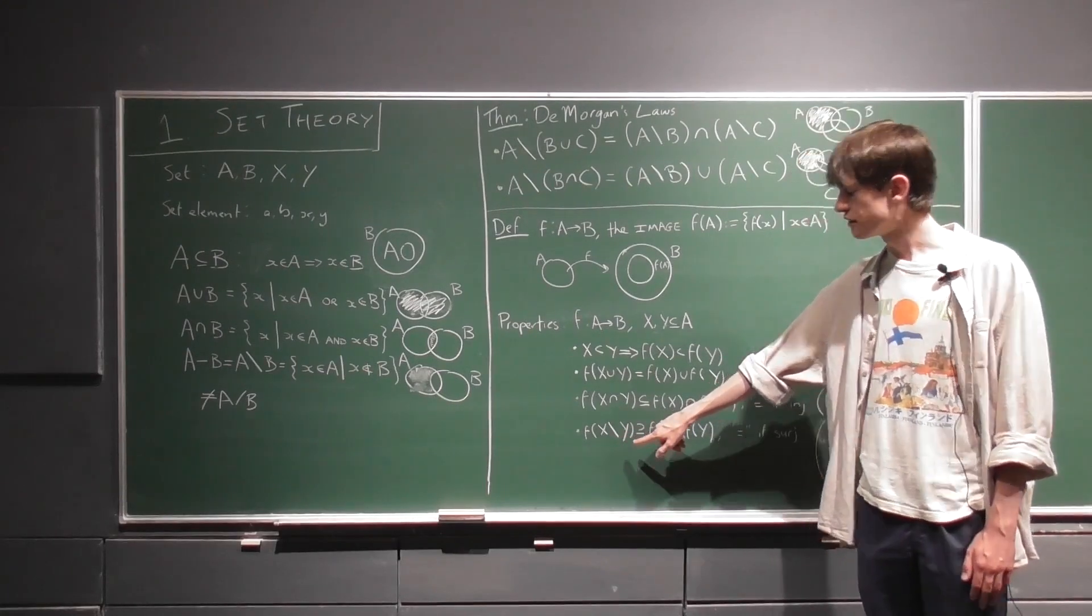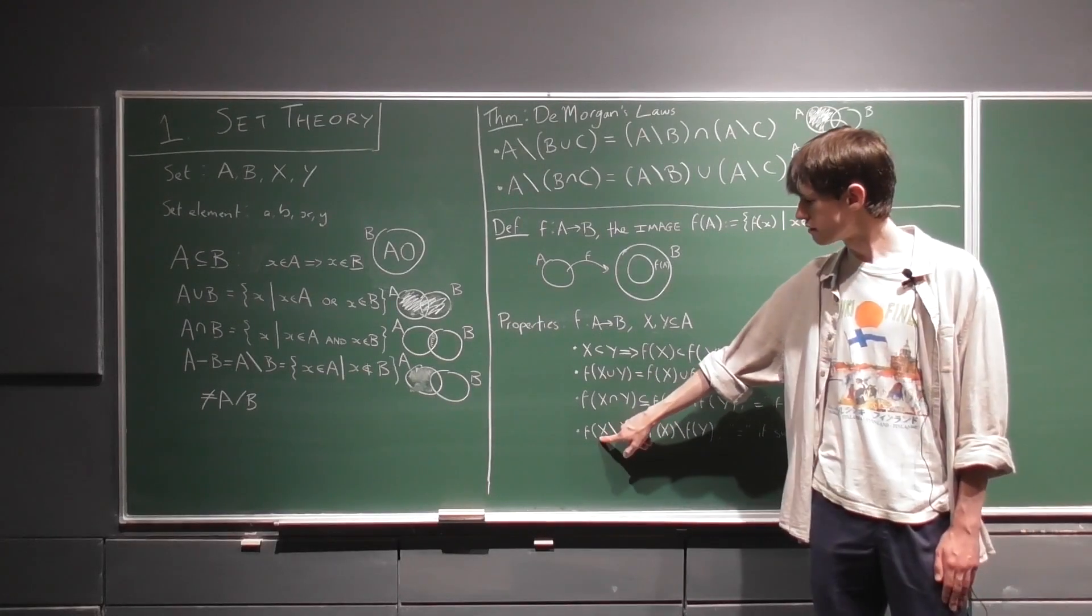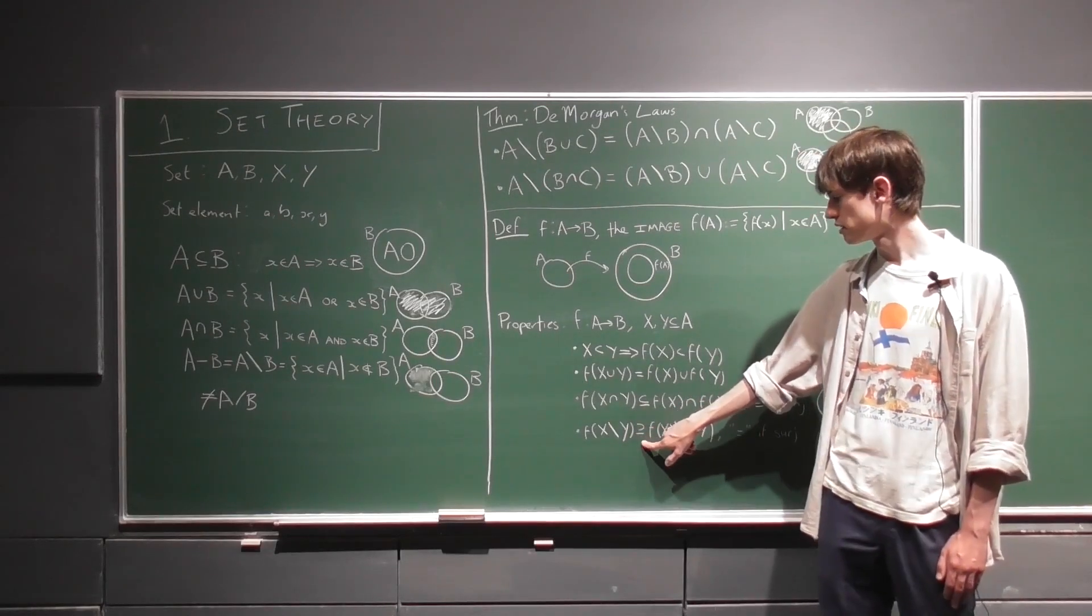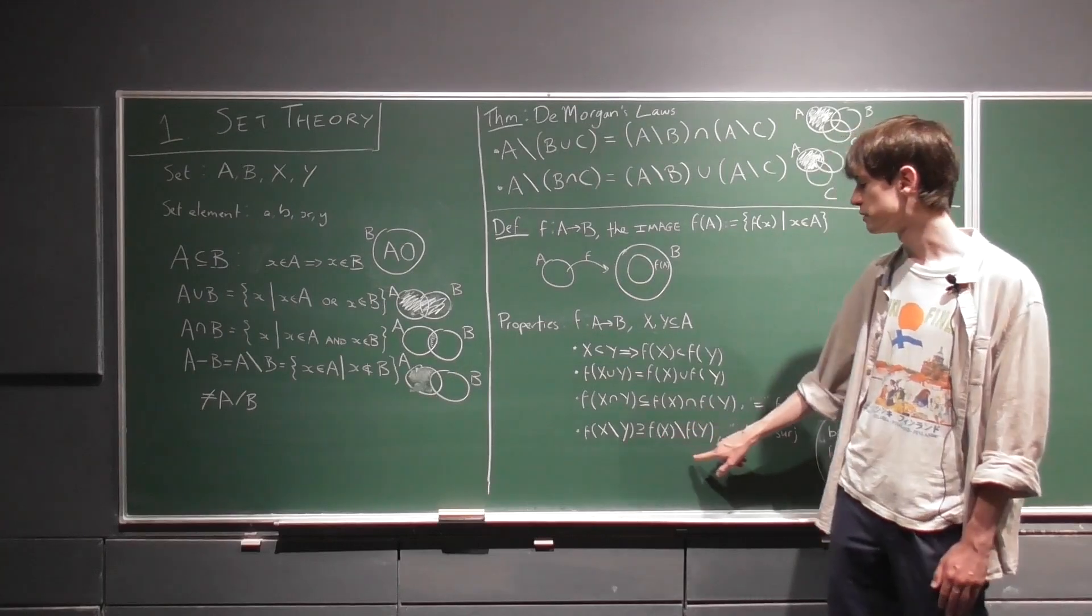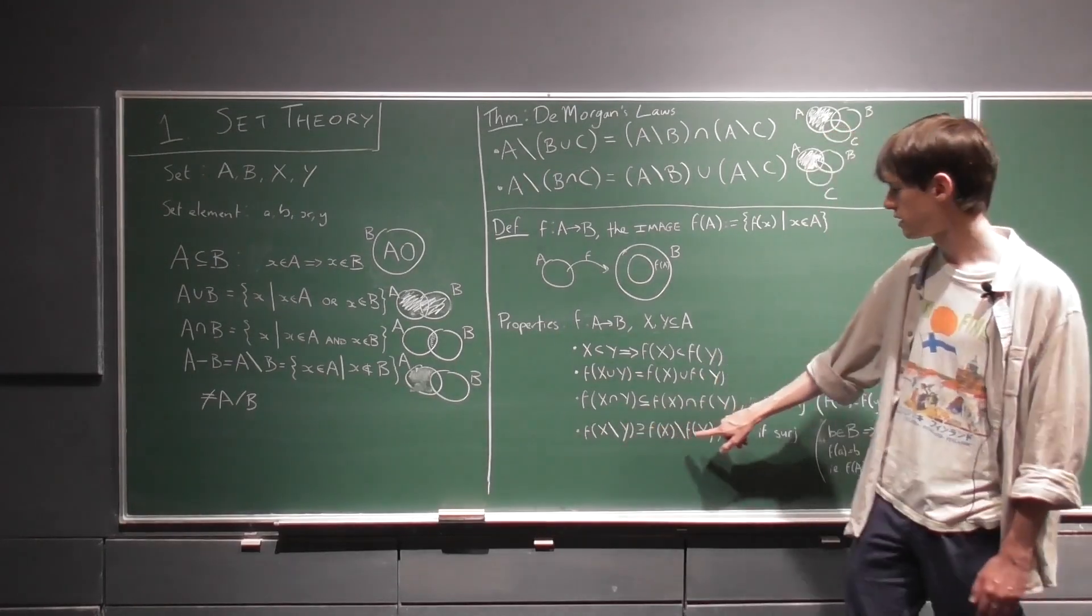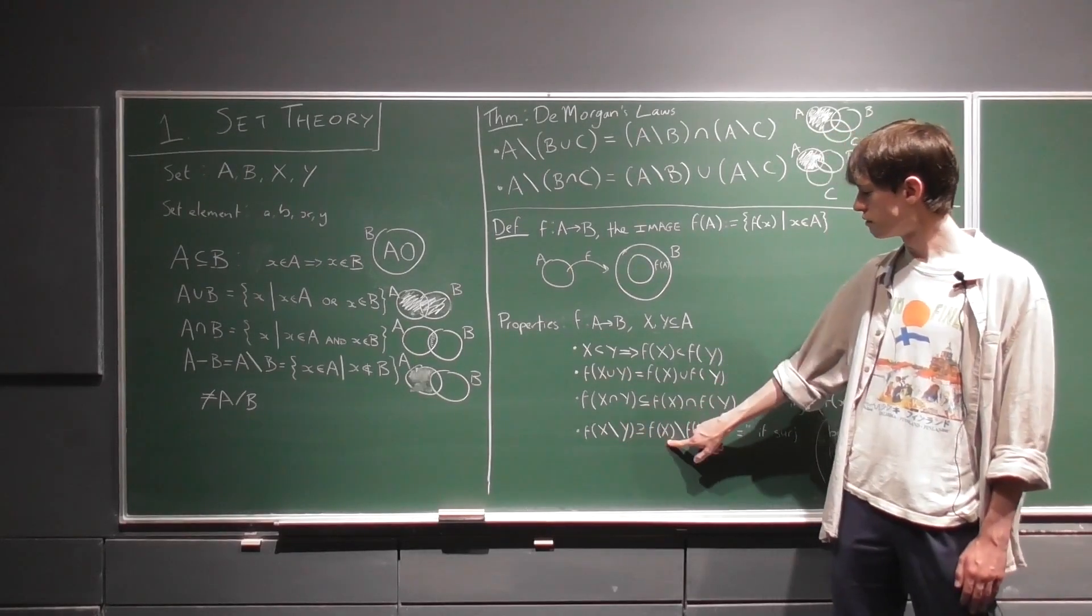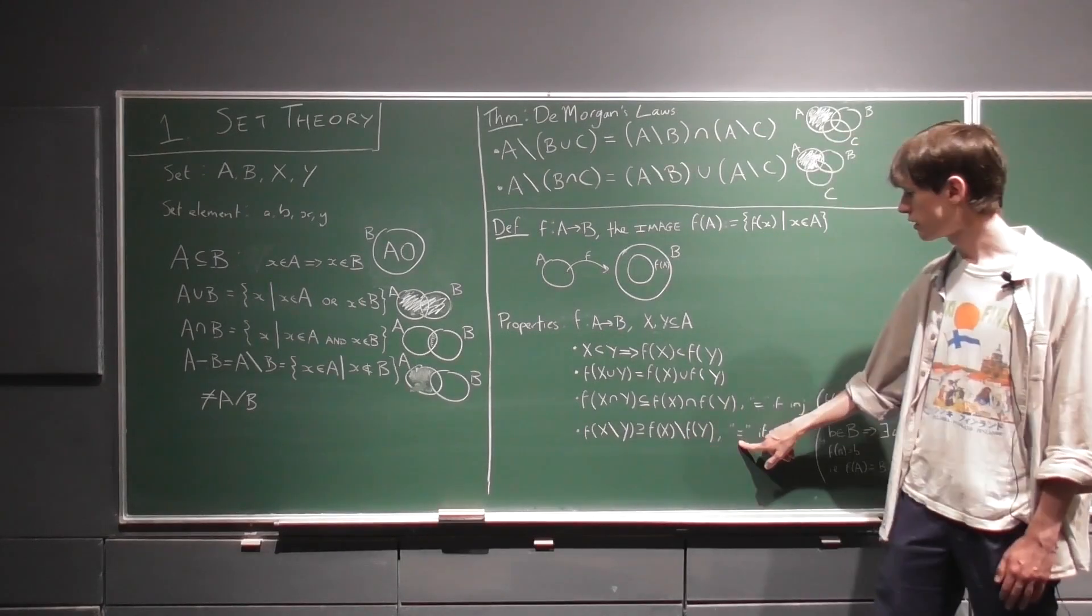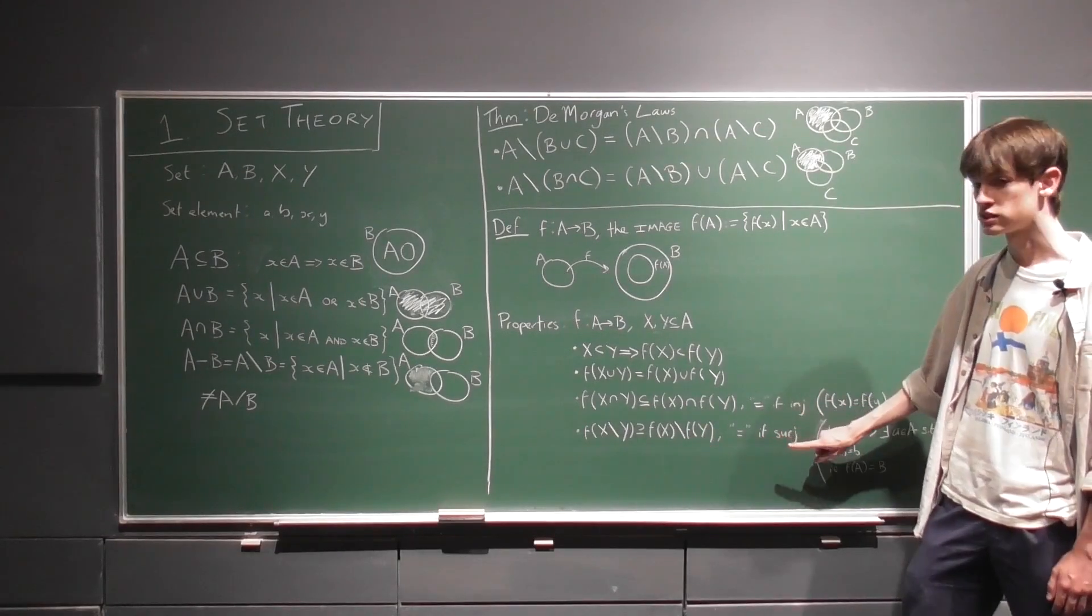Again now for set differences, f of the image of the difference is a superset, which is just a subset written the other way, so you can read it this way if you'd like, but it's a superset of the difference of the images. And equality holds again if f was surjective.